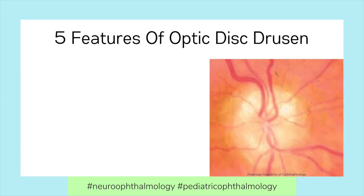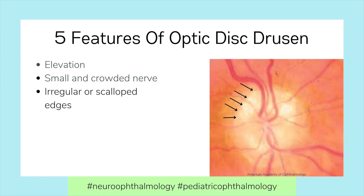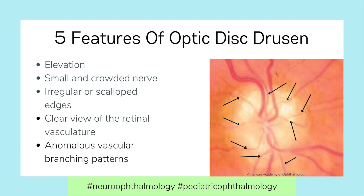There are five clinical features of Optic Disc Drusen to look for: elevation, small and crowded nerve, irregular or scalloped edges, clear view of the retinal vasculature, and anomalous vascular branching patterns.